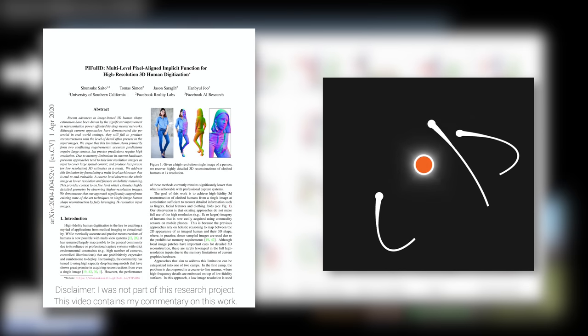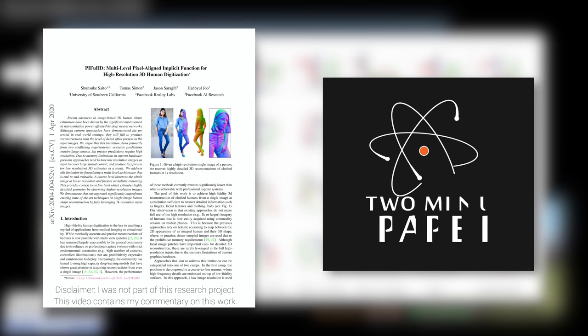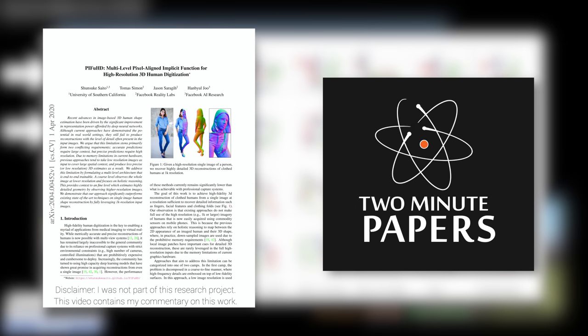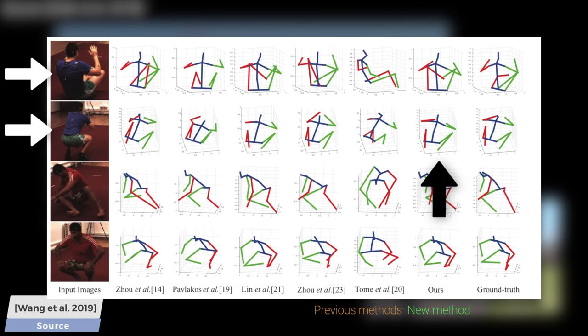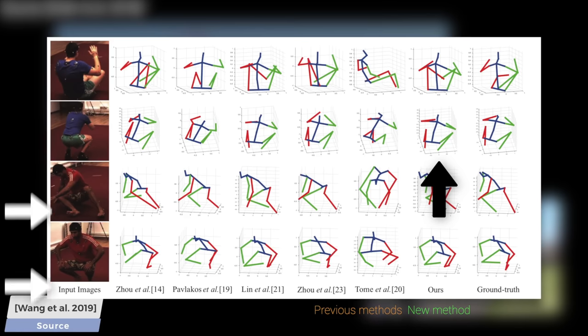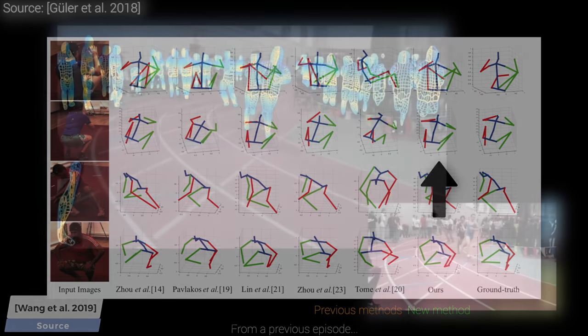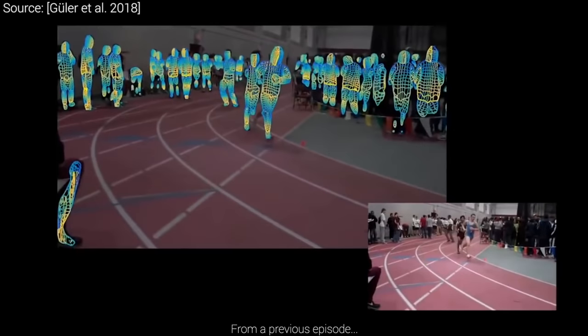Dear Fellow Scholars, this is Two Minute Papers with Dr. Károly Zsolnai-Fehér. Today, a variety of techniques exist that can take an image that contains humans and perform pose estimation on it. This gives us these interesting skeletons that show us the current posture of the subjects shown in these images.